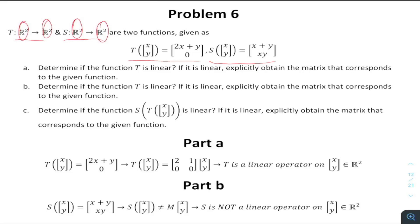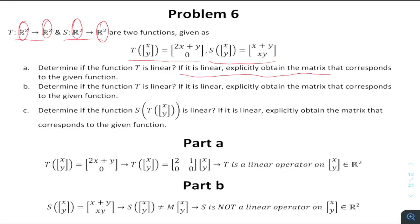Part A asks whether T is linear or not, and if it is linear, asks us to find the matrix that corresponds to that given function. Just by looking at the expression, we can directly conclude that T is linear.